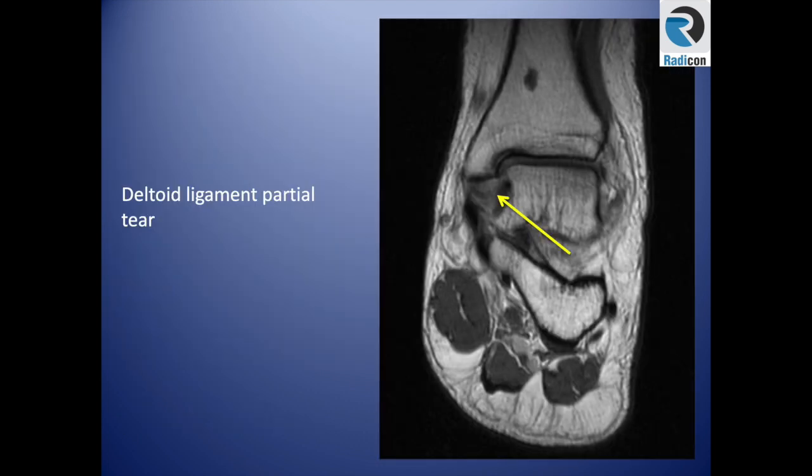The deltoid ligament normally has a fanning appearance. If you lose that and see thickening with edema, that indicates injury within the deltoid ligament.